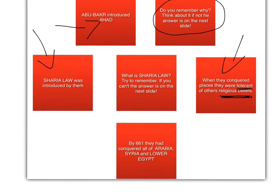By 661, they had conquered all of Arabia, Syria, and Lower Egypt. When Ali was finally murdered by an enemy, the next people to take over were called the Umayyads, and in another tutorial I'll explain that.